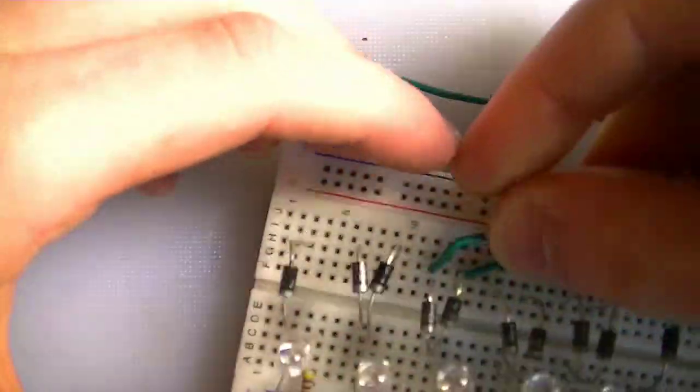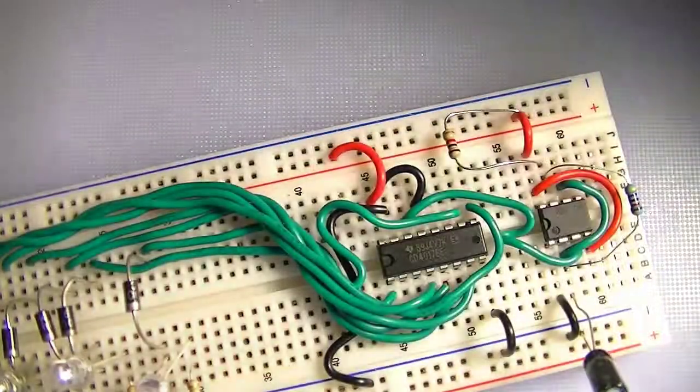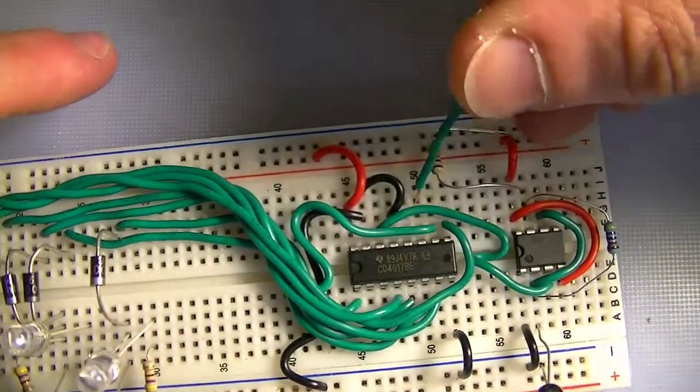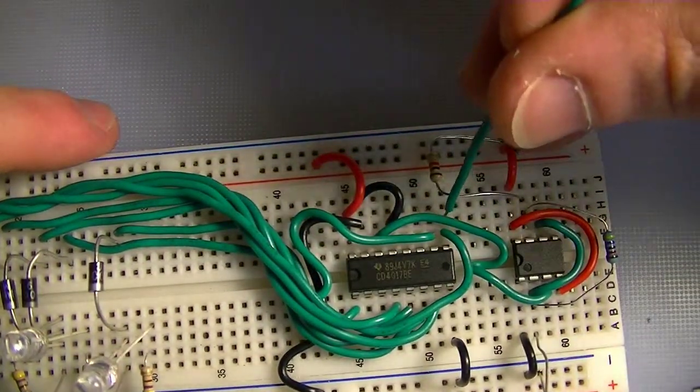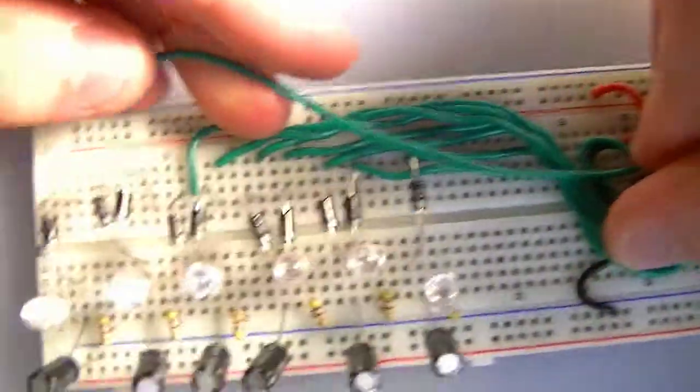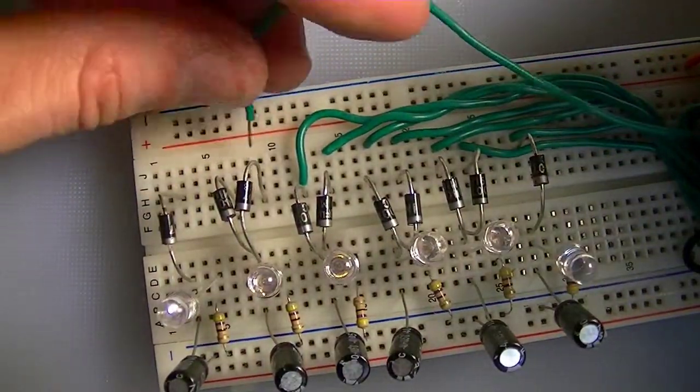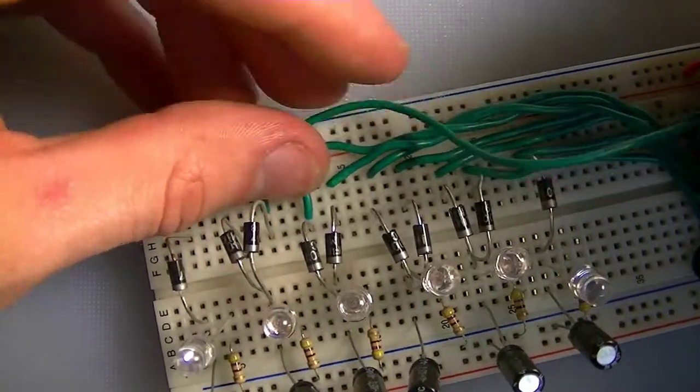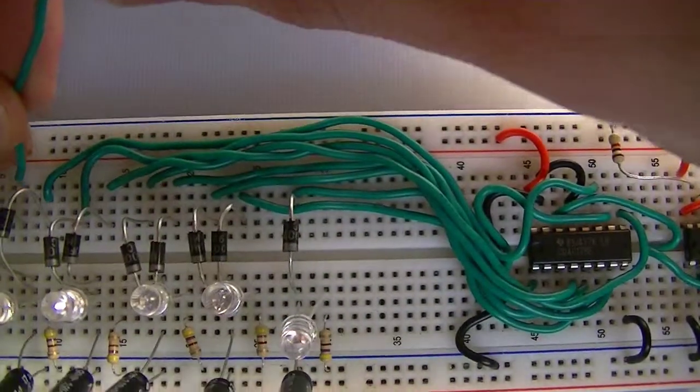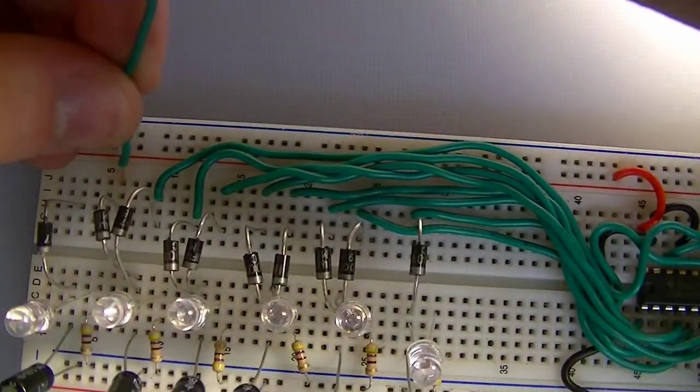To that second diode on that same LED. Pin 11—11 is right next to 10 there, so you go 9, 10, 11. Grab this on the side, and that goes to the second LED, second diode. So it doesn't matter which diode it goes to as long as the same LED. Next diode goes to 2, so there we go.